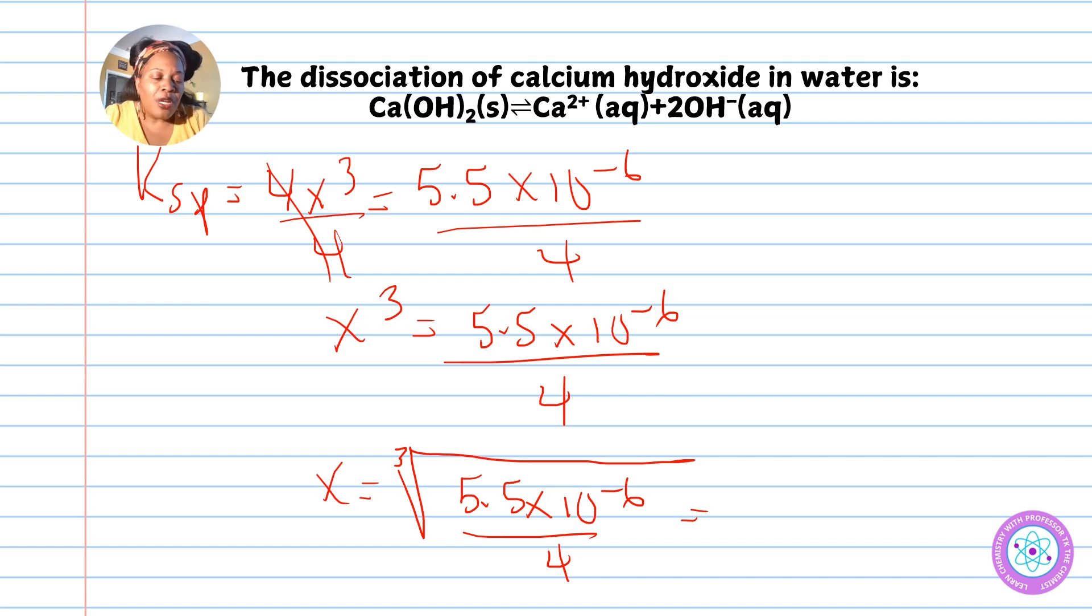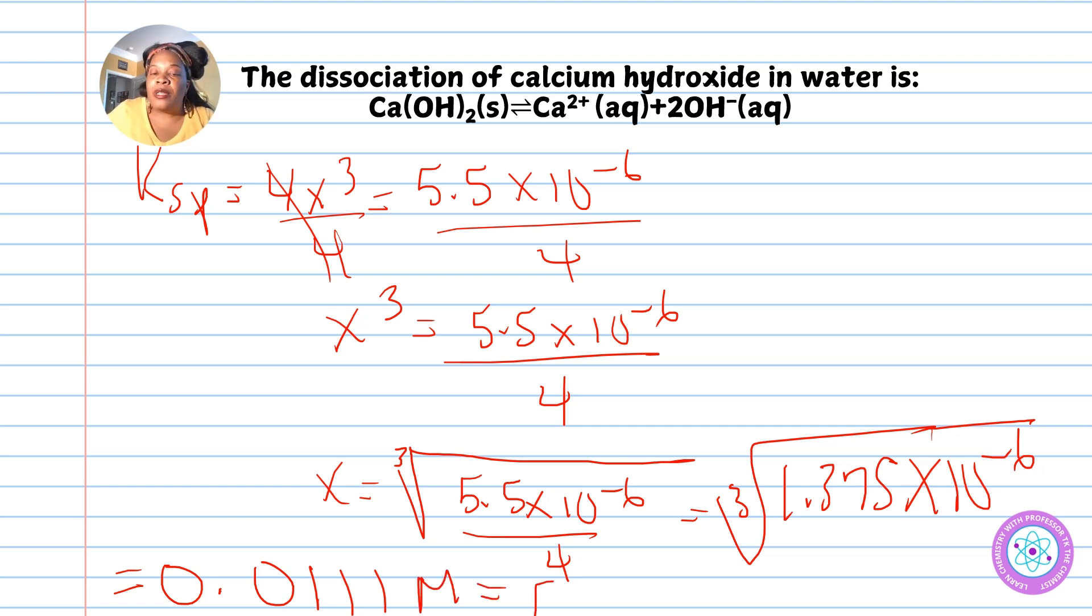We calculate 5.5×10⁻⁶ divided by 4, which gives 1.375×10⁻⁶. Taking the cube root of 1.375×10⁻⁶, we end up with 0.0111 molar for the calcium ion concentration.